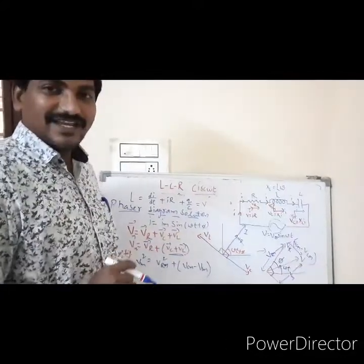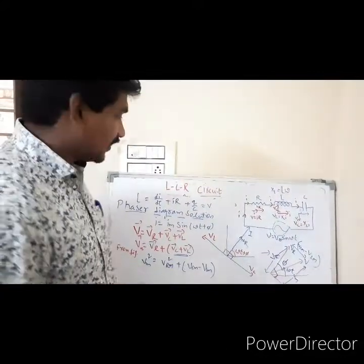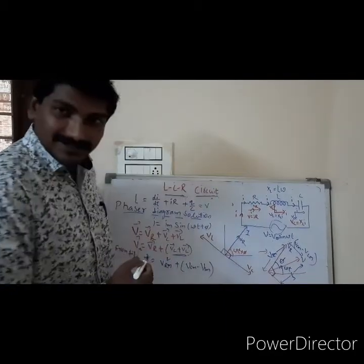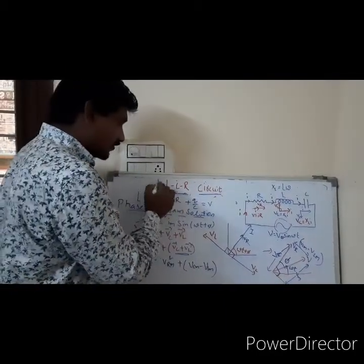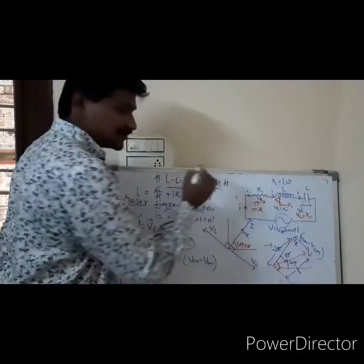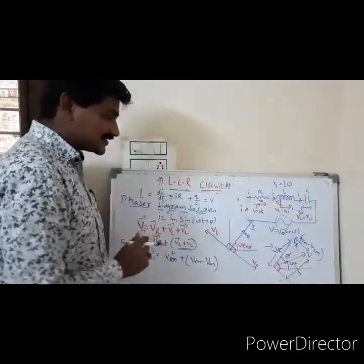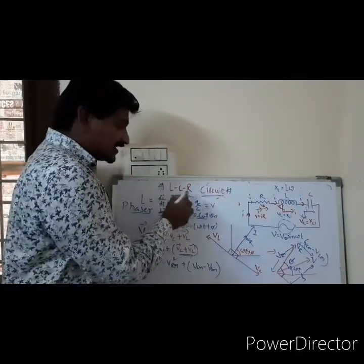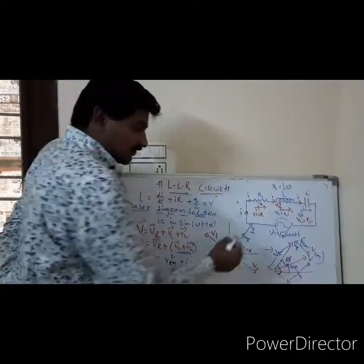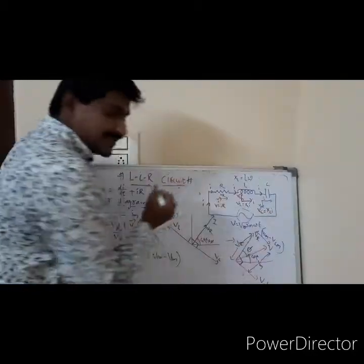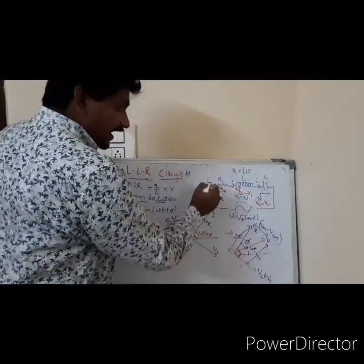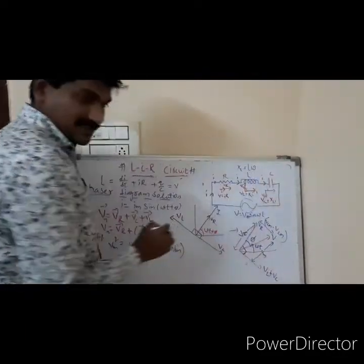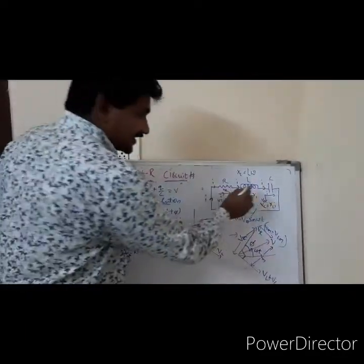Hi viewers, this is Big Air Physics Classes. I am coming with the topic from AC currents — alternating currents — that is the most important topic: LCR circuit for all the CBSE students of class 12th. LCR circuit — in the sense, when we are applying the AC voltage to the elements of resistance, inductor, and capacitors which are connected in series.